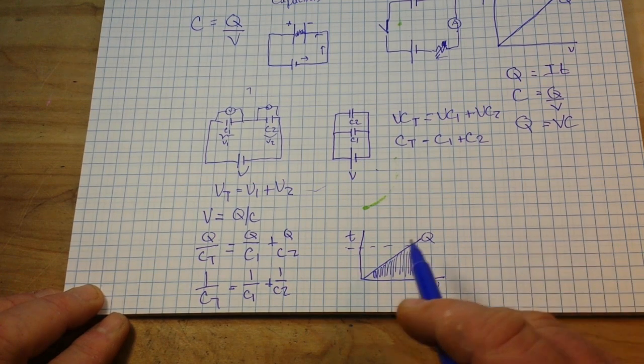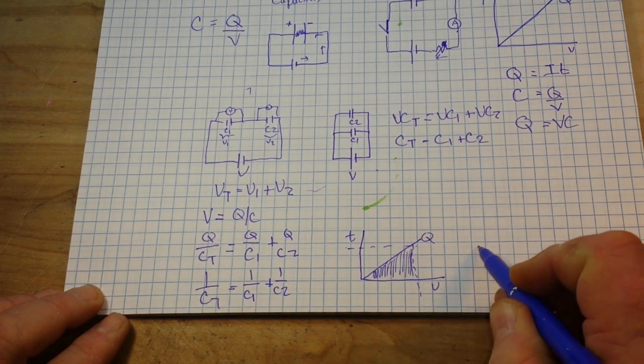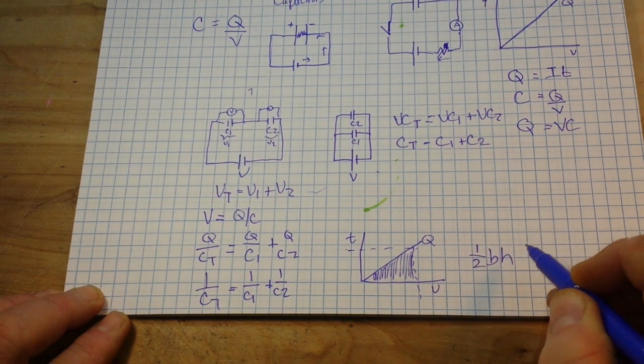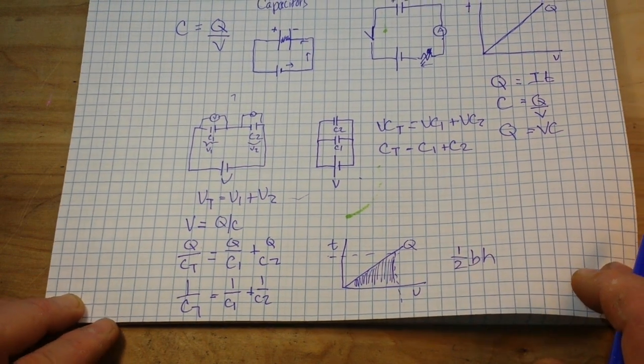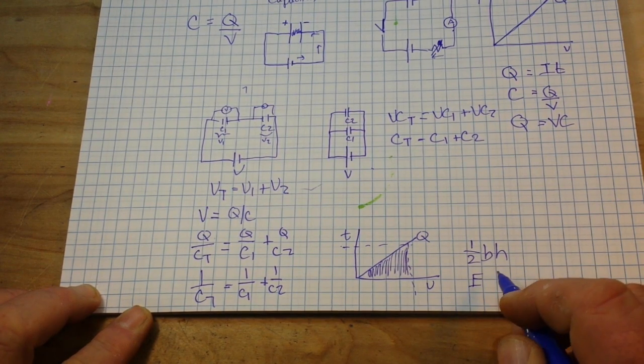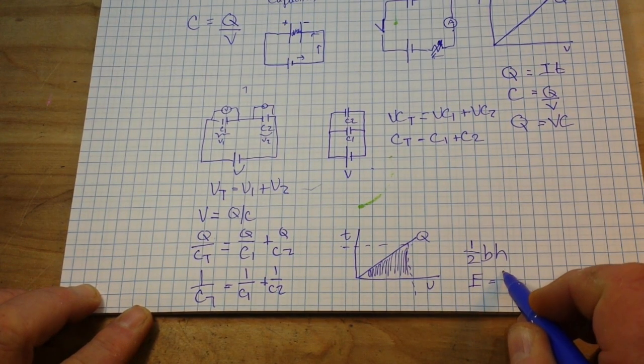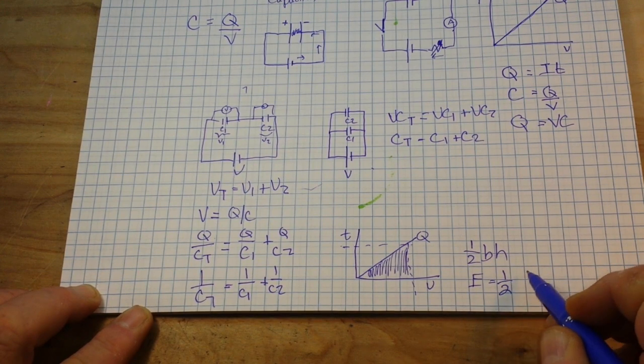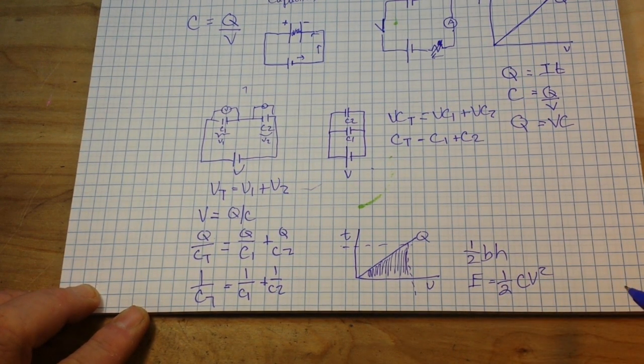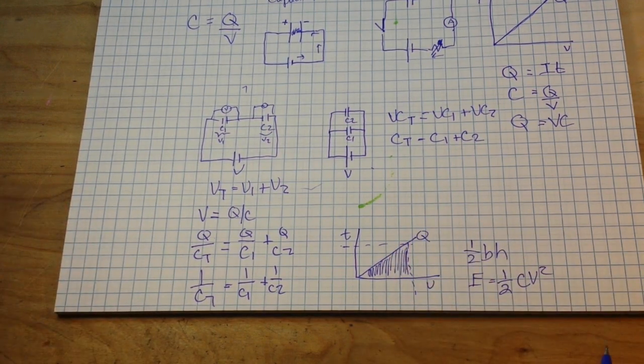And, what's the formula for the area of a triangle? Well, it's half base times height. So, the energy that is stored in our capacitor equals half CV squared. Boom. That's all there is to it.